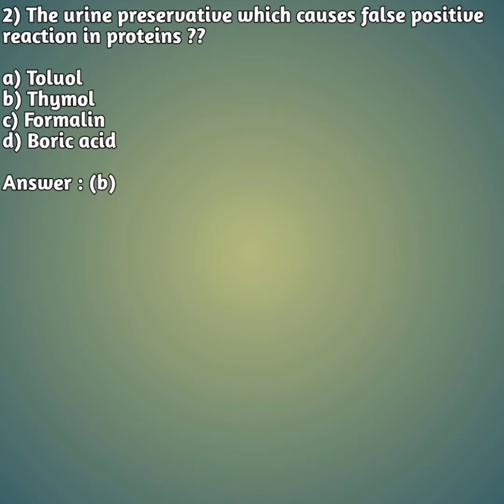Second question: the urine preservative which causes a false positive reaction in proteins — option A: toluol, option B: thymol, option C: formalin, and option D: boric acid. Your right answer is option B — thymol will give you a false positive reaction in proteins.